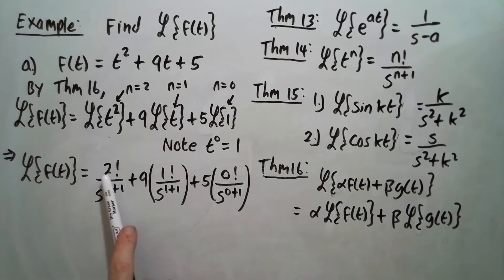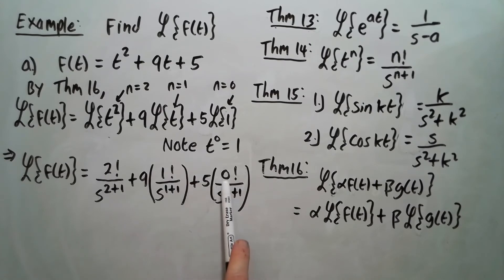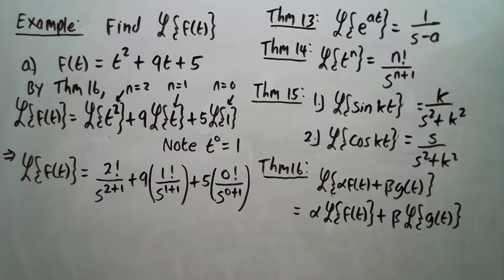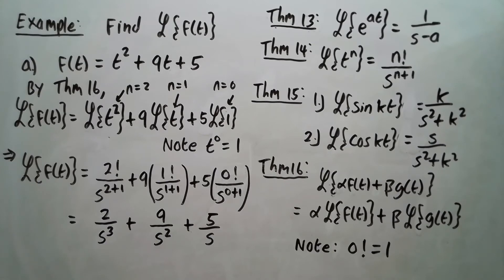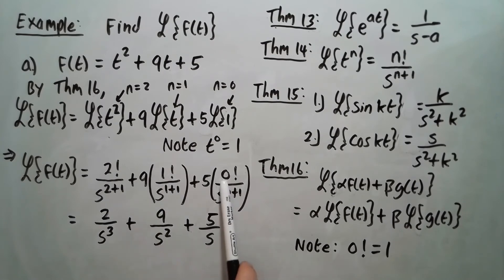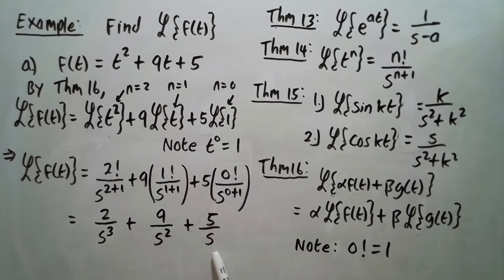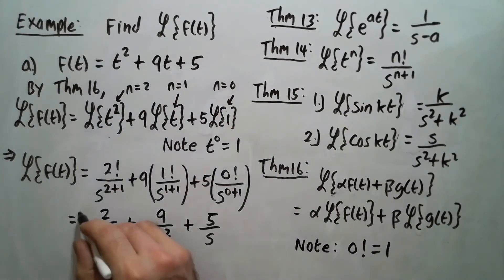Now, 2 factorial is 2, 1 factorial is 1, and by definition 0 factorial is also 1. Simplifying: 2 factorial is 2, so it's 2 over s cubed; then 9 times 1 gives 9 over s squared; and 0 factorial is 1 so it's 5 times 1 giving 5 over s. So the Laplace transform of f is 2 over s cubed plus 9 over s squared plus 5 over s. That is your answer.